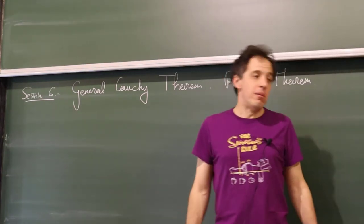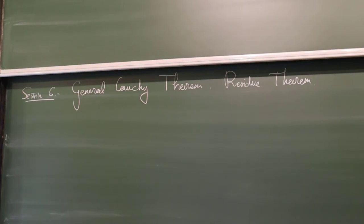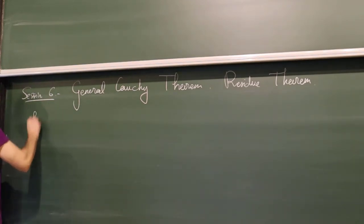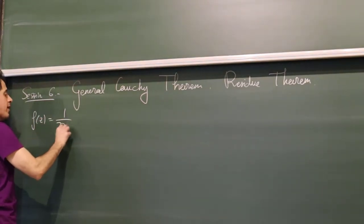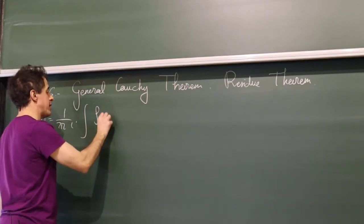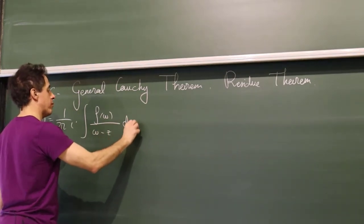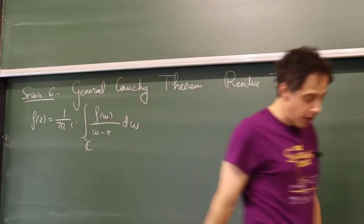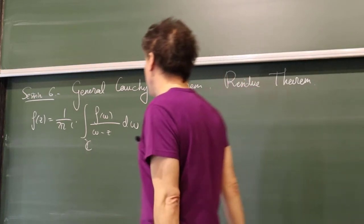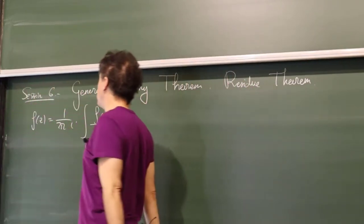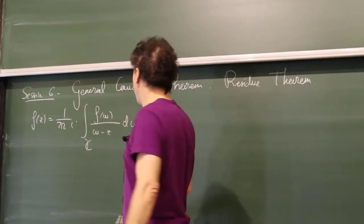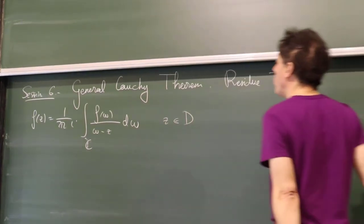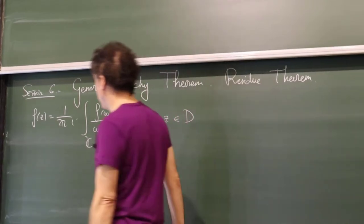We have stated and more or less proved, not with full details, the Cauchy theorem for a disk. As I remember, it said that you have something like this, where the path gamma was the circle. You go around the circle. This equality is true if Z is in the disk surrounded by the circle. In fact, we could slightly improve this equality, writing the following.